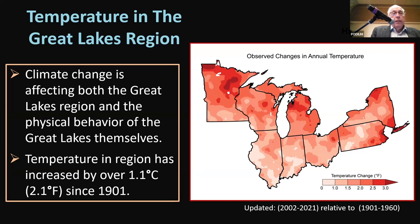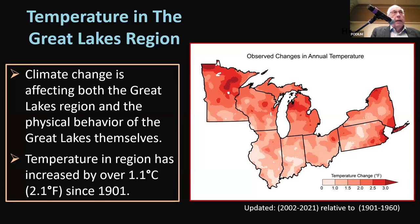Applying STAR to the Great Lakes: this analysis looks at recent trends in temperature from 2002 to 2021 versus 1901 to 1960, with the model trained on the earlier time period. The region has seen about a 1.1 degree Celsius — or 2.1 degrees Fahrenheit — increase in temperature since 1901. We see more of that increase at higher latitudes than at lower latitudes. In these analyses so far, we have only looked at the continental United States, but that is going to change — we're currently trying to apply the technique globally.